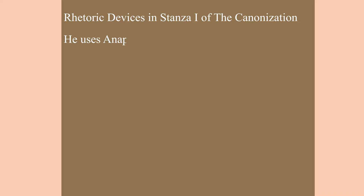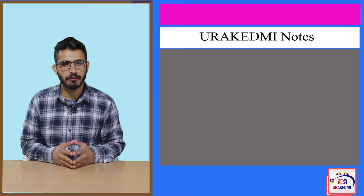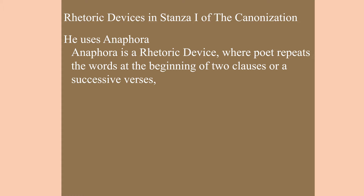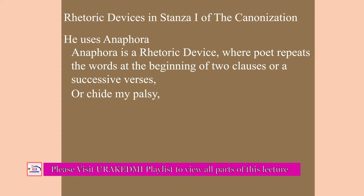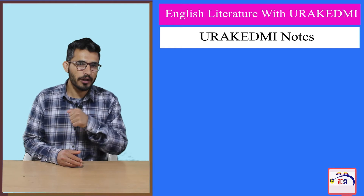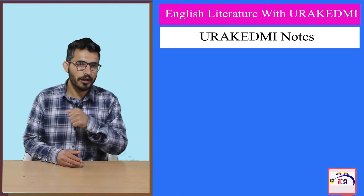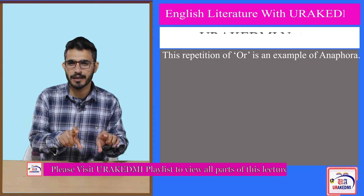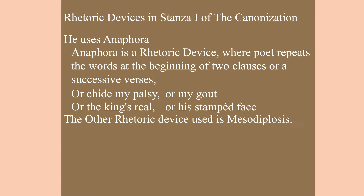In the very first stanza, he uses anaphora. Anaphora is a rhetorical device where a poet repeats the first word successively in two or more verses. For example: 'are shied my palacy,' 'are my gout,' 'are the king's real face,' 'are his stamped face.' John Donne repeats 'are' almost four times at the beginning of different phrases or verses.